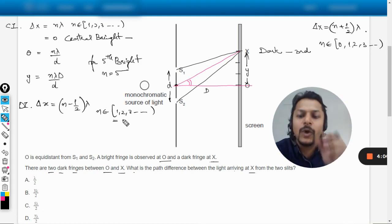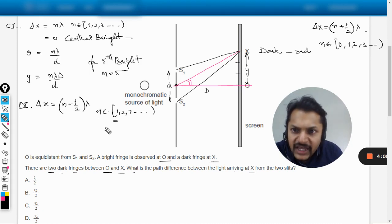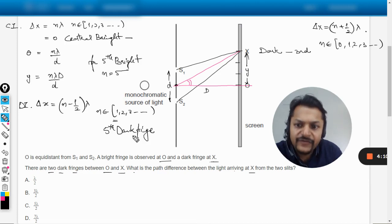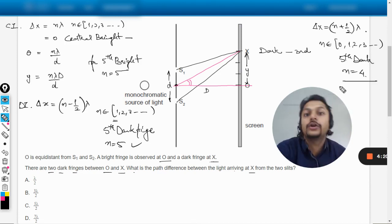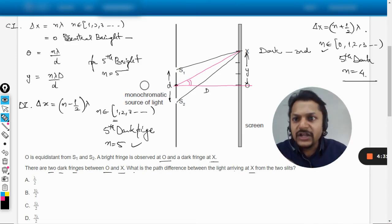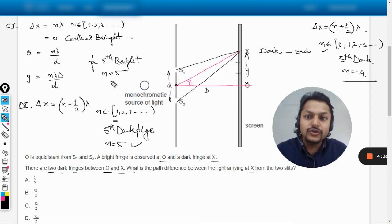I am doing so because here in this case there is a confusion. In this case the n should start from 0 and it moves like this. In our case the n is starting from 1. So in our case, if you're talking about the fifth dark fringe, simply you substitute n equals 5. But here, if you're talking about the fifth dark fringe, you have to substitute n equals 4, not 5.